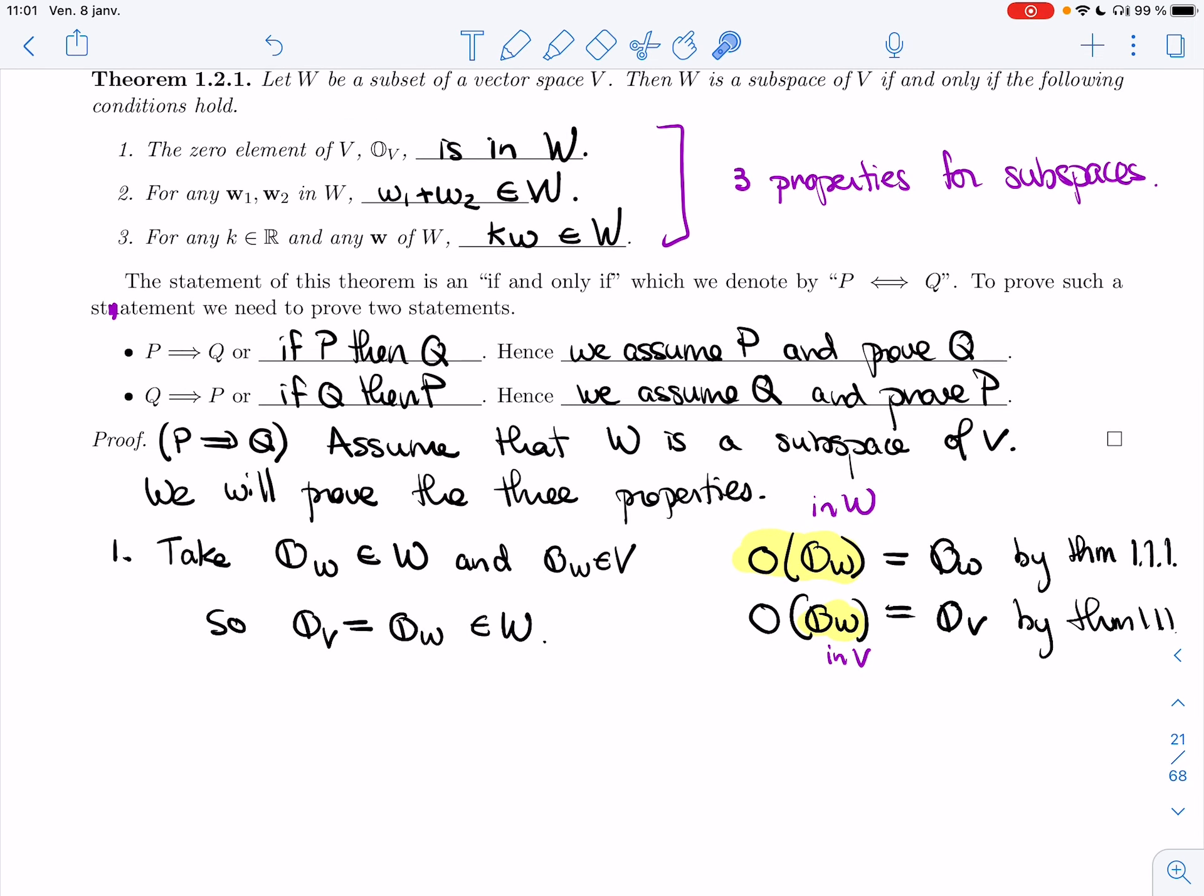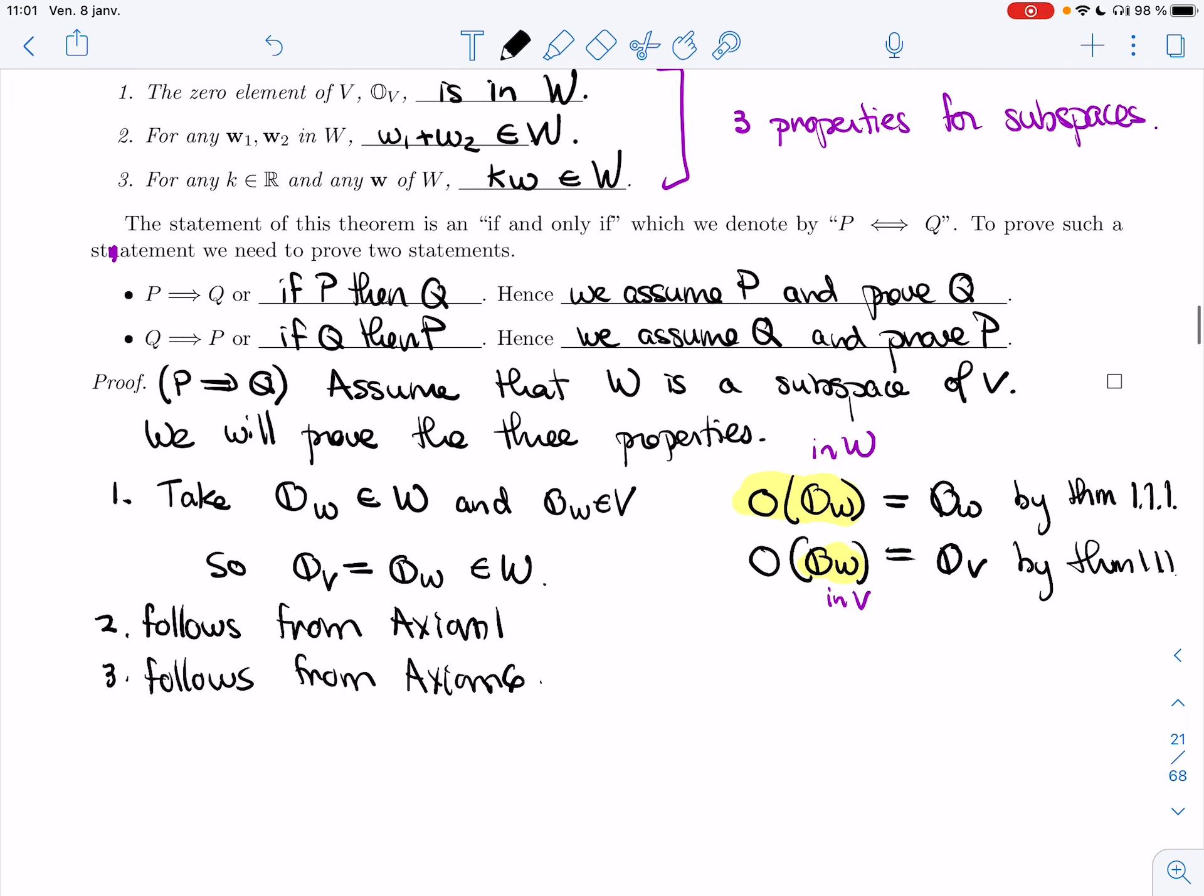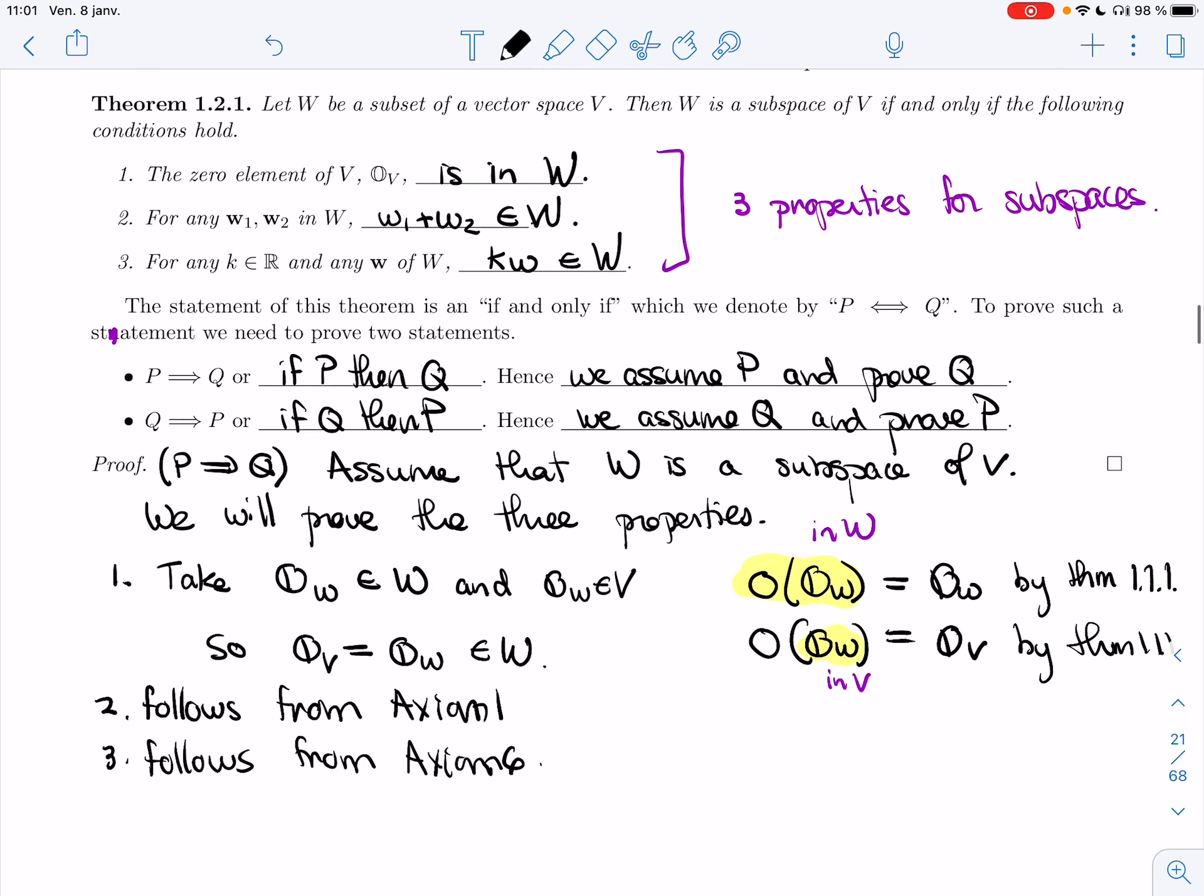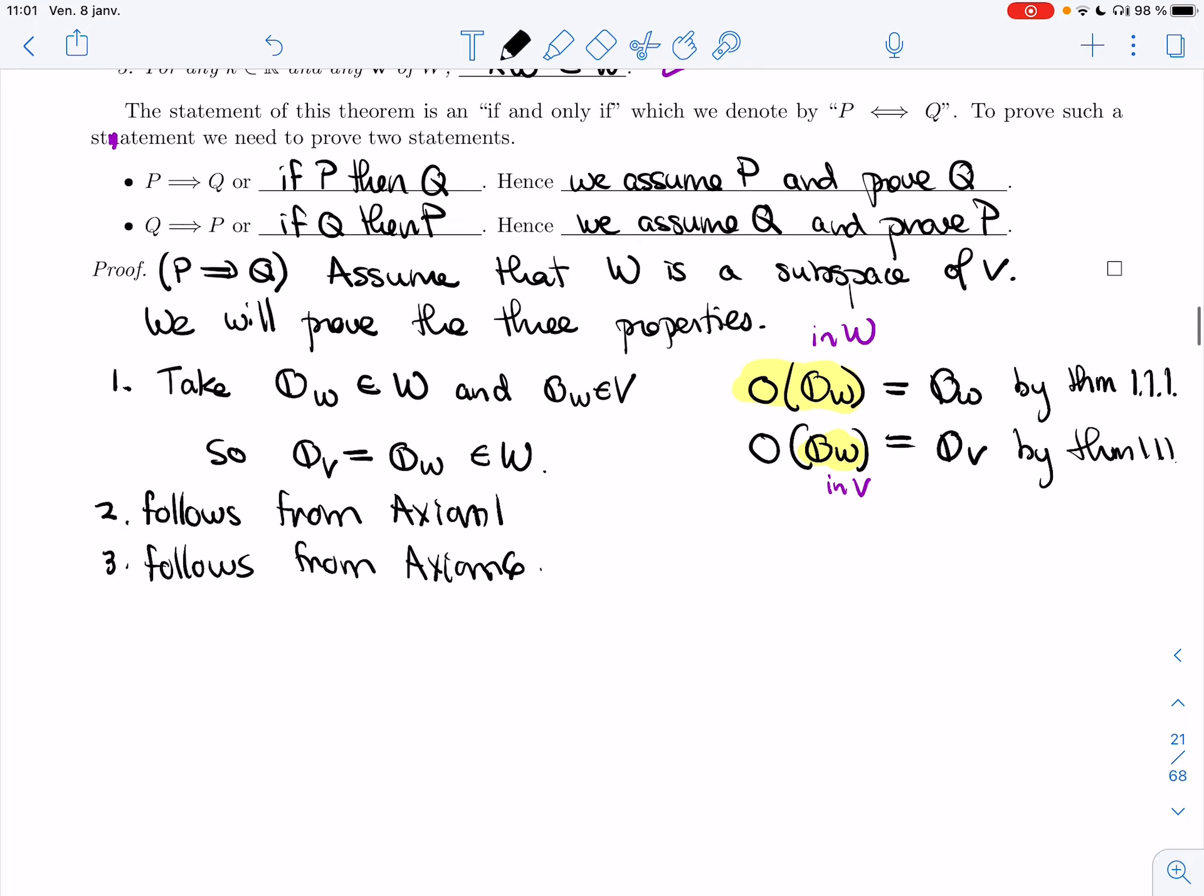That proves the first one. Second one is axiom 1. Third one is axiom 6. So 2 follows from axiom 1, which was closure of the addition, and 3 follows from axiom 6, which was closure of the scalar multiplication. So this direction was easy, because this is clearly easier to prove than the 10 axioms. So we'll do more work in the next direction.